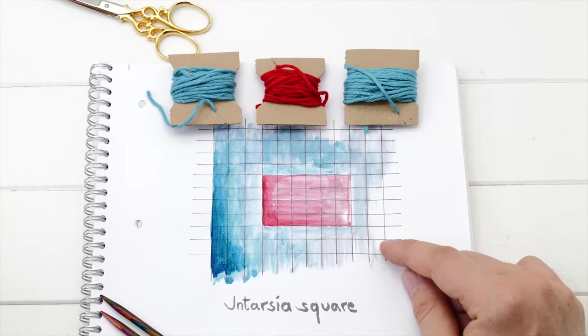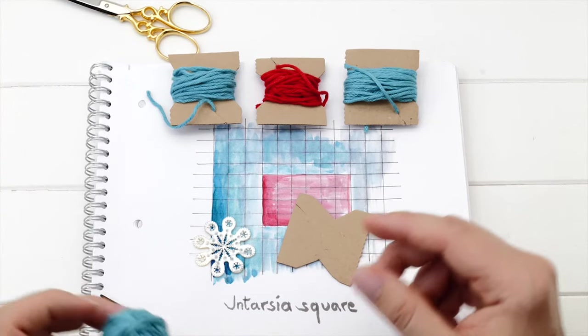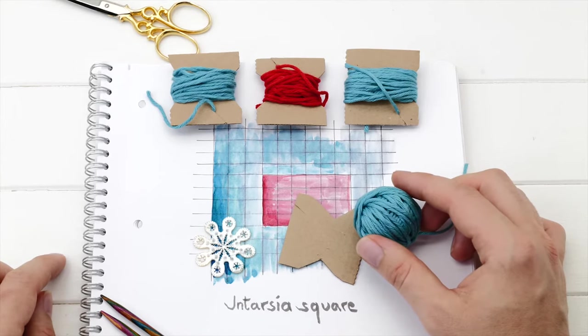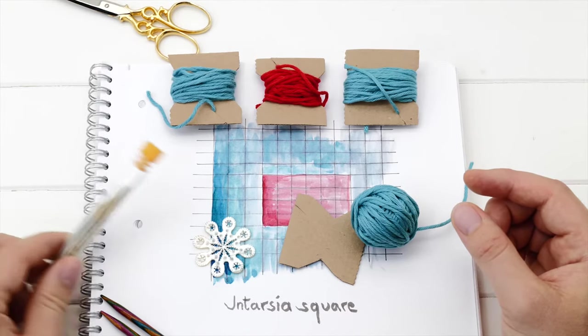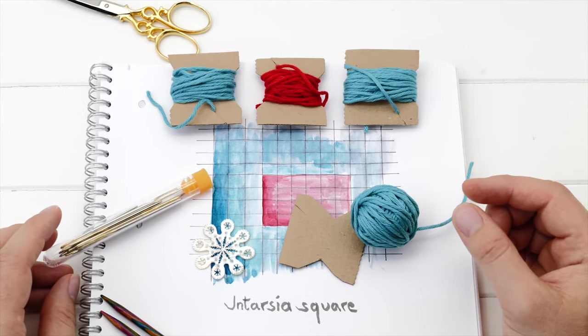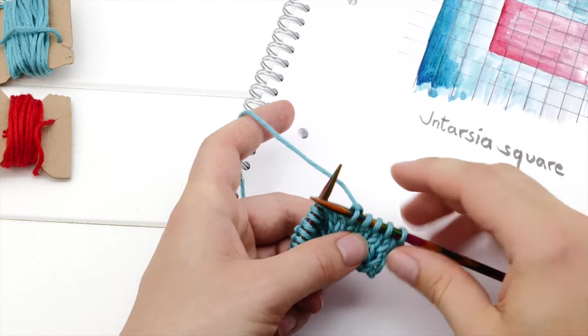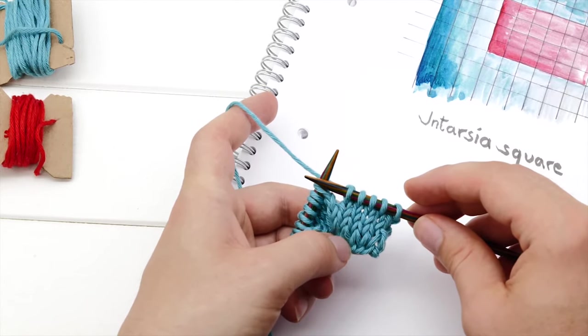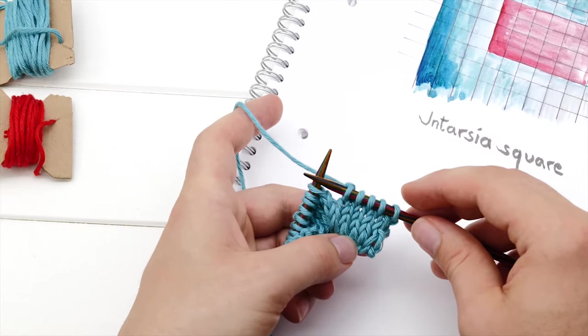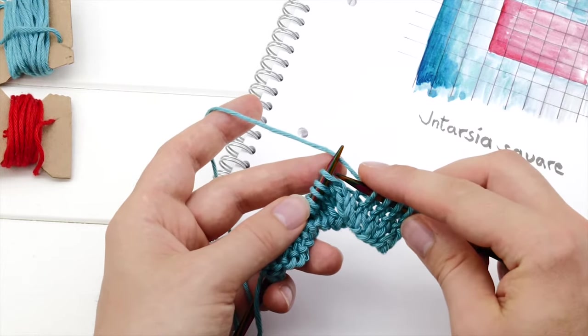You can buy professional bobbins like this one, but you can also create your own using cardboard. If you don't mind that they may run away, you can also wind up the yarn in little balls. And for finishing up, you will also need a tapestry needle. Let's knit our little square together. I already knit three rows in stockinette stitch. Stockinette stitch is probably the most popular stitch for intarsia knitting, but you can actually combine this technique with any other pattern as well. Cables, lace, even socks, this all is possible.